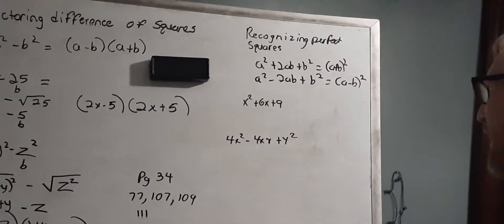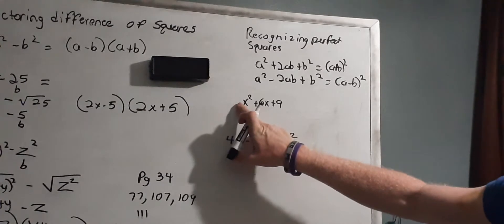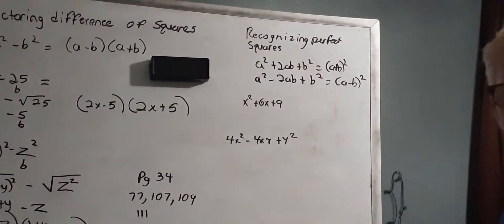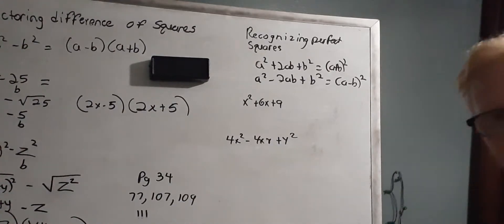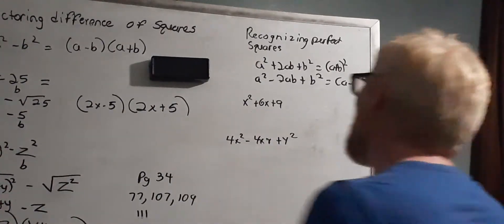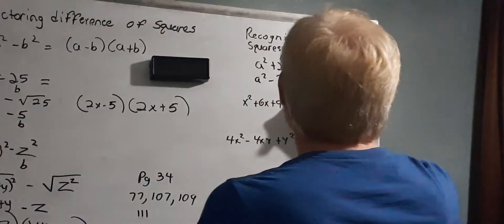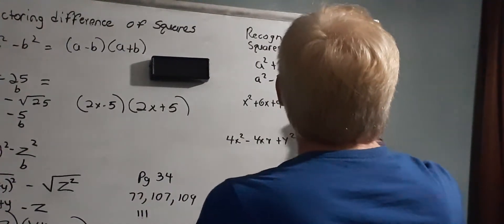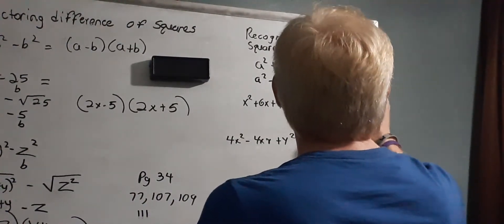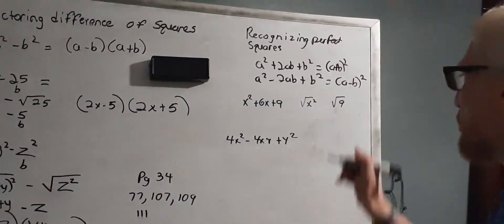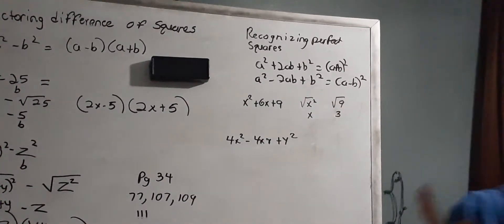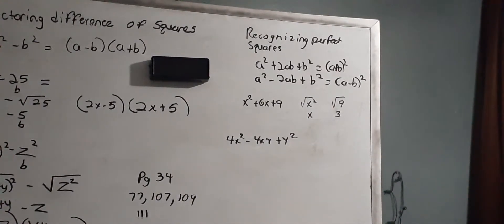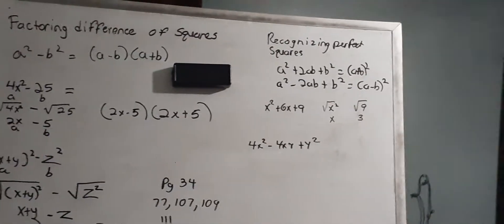For the first example, I find the square root of x squared and the square root of 9. The square root of x squared is x, and the square root of 9 is 3. So x is a and 3 is b. The formula says 2ab for the middle term, so I multiply 2 times a times b: 2 times x times 3 equals 6x.